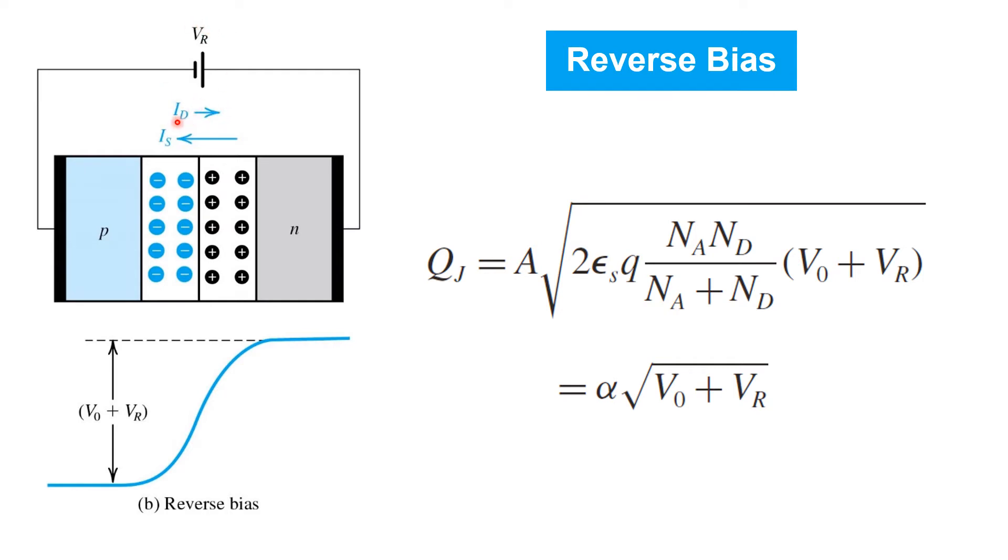So in effect, you can think of this as a kind of parallel plate capacitor separated by intrinsic silicon as the insulator, except that the separation between the plates of the capacitor is a function of the voltage across it. So this is unlike the conventional linear capacitors that we're used to. In fact, this is a nonlinear capacitor.